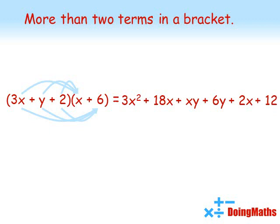So again we've multiplied everything in that first bracket by everything in the second bracket. Then we're just going to check if we can simplify anything. We've got two coefficients of X there so let's bring them together. 3X squared plus 20X plus 6Y plus XY plus 12 is our final answer.